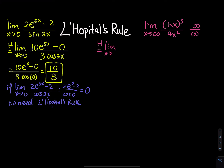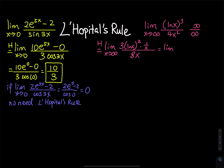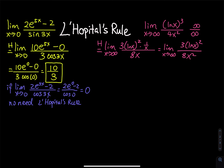The first application: as x approaches infinity, apply the chain rule on top. Bring the 3 down, giving ln(x) squared, then the derivative of ln(x) is 1 over x. Carry the 1 over x to the bottom, so the function becomes the limit as x approaches infinity of 3 ln(x) squared divided by 8x squared. Note: I did not write H, meaning I am only cleaning up the function by rewriting terms — I am not applying L'Hôpital's rule again yet.